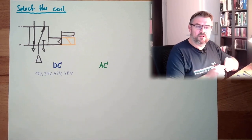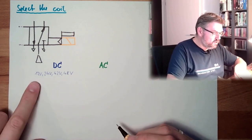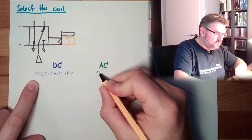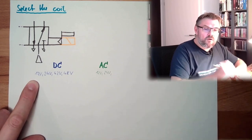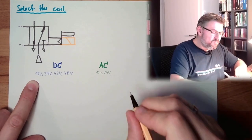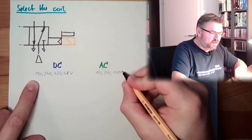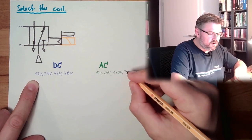So on AC side, we also have these small voltages here, 12 volt, 24 volt. However, we also have their bigger voltages, like 110 volts and 230 volts.